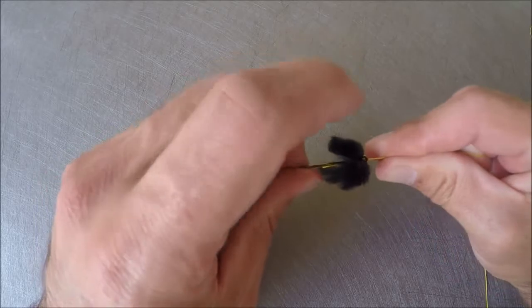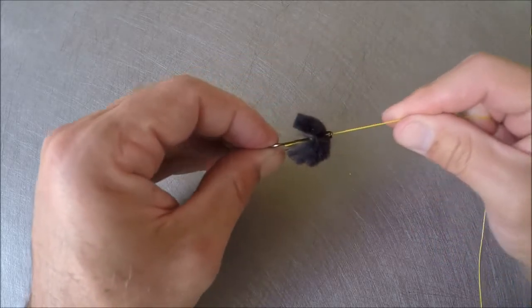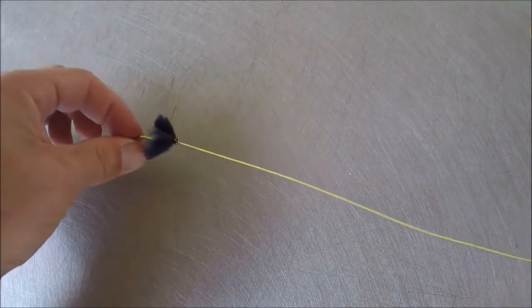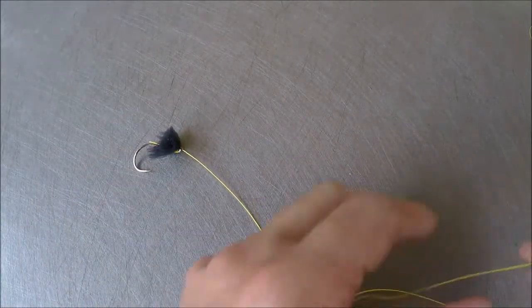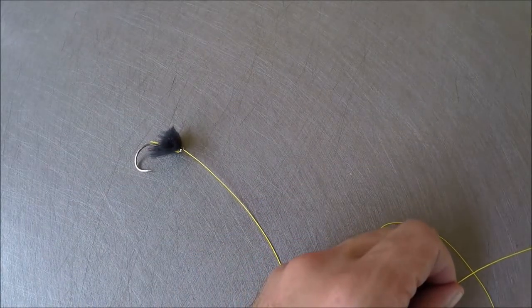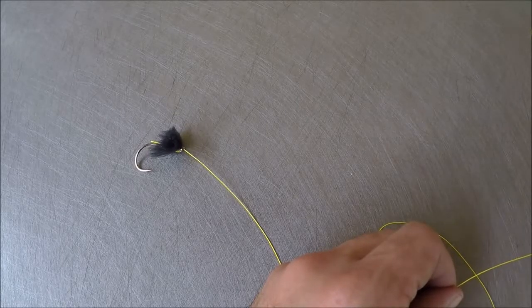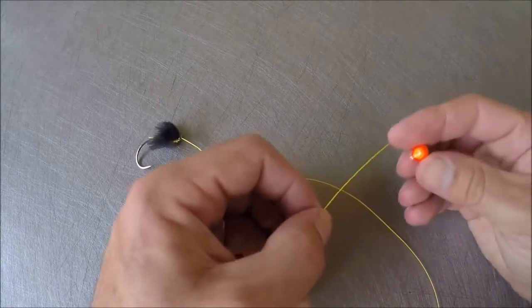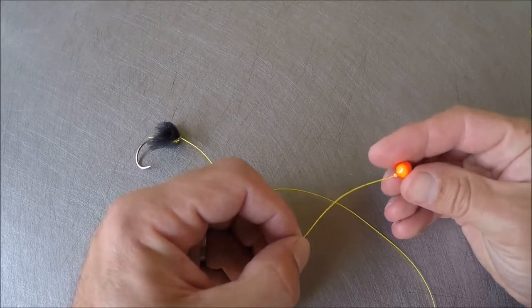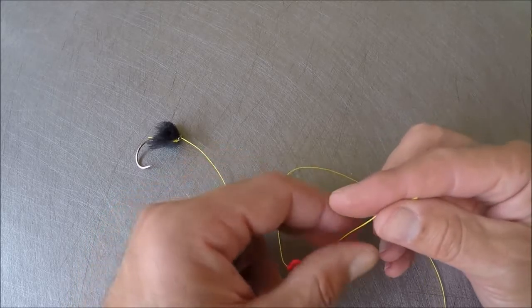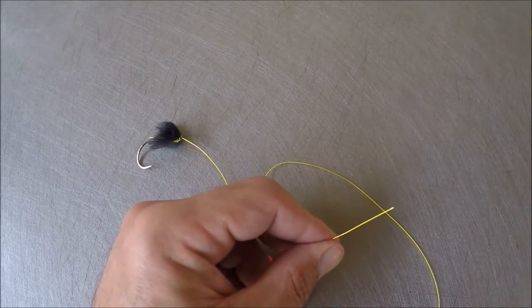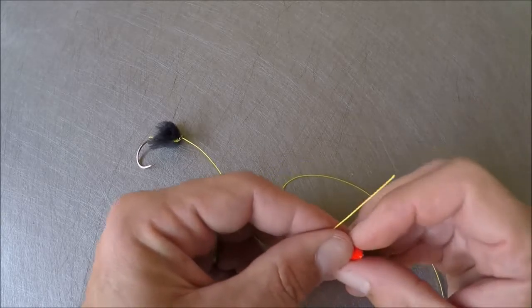To finish this off, I like to fish corkis, so I've got two orange corkis which is a pretty common color to be using for salmon and steelhead. I've got two here, so there's one, thread the first one on, grab my second one and I'll thread that one on.